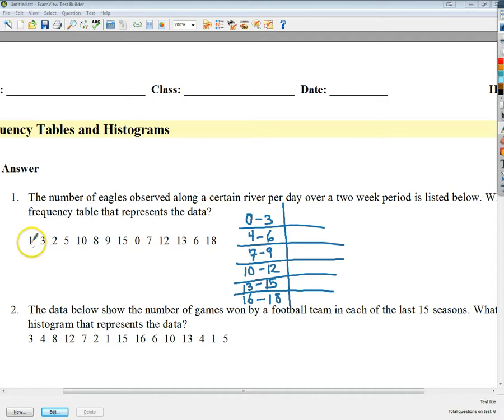So what I'm going to do is look to see how many fall in that group. So there's one, two, three, four that fall in that group. Four to six, one, two. Seven to nine, eight, nine, seven, so there's three there. Ten to twelve, I've got one, two of those. Thirteen to fifteen, I've got one, two of those. And sixteen to eighteen, I've got one. So that's my frequency table.